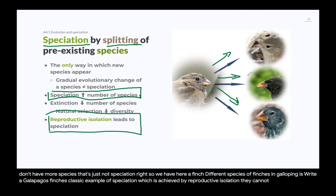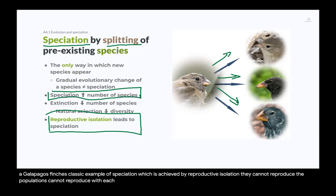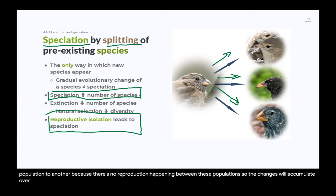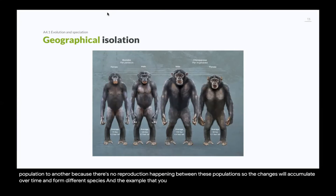Reproductive isolation means populations cannot reproduce with each other, so they gradually change independently. Those changes do not pass from one population to another because there is no reproduction happening between them. Changes accumulate over time and form different species.